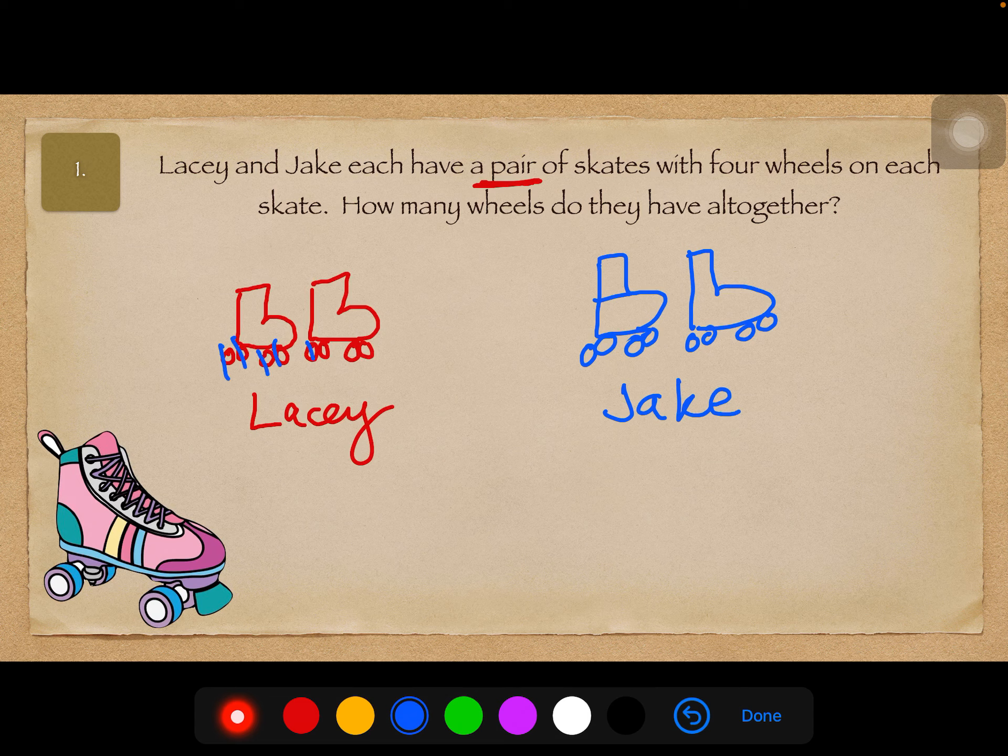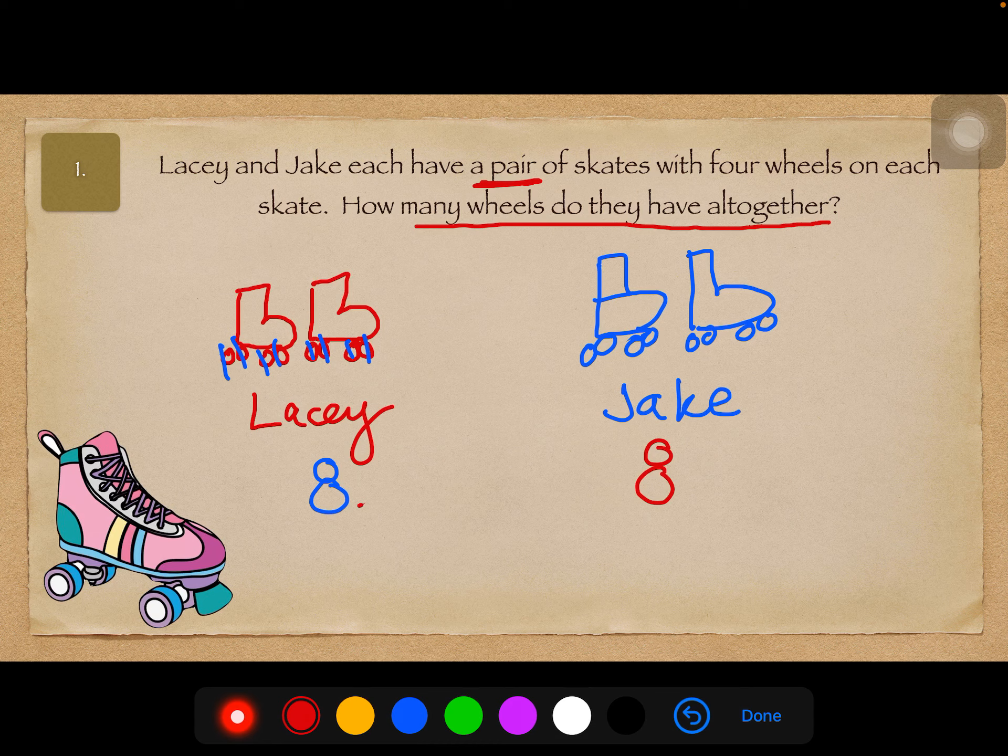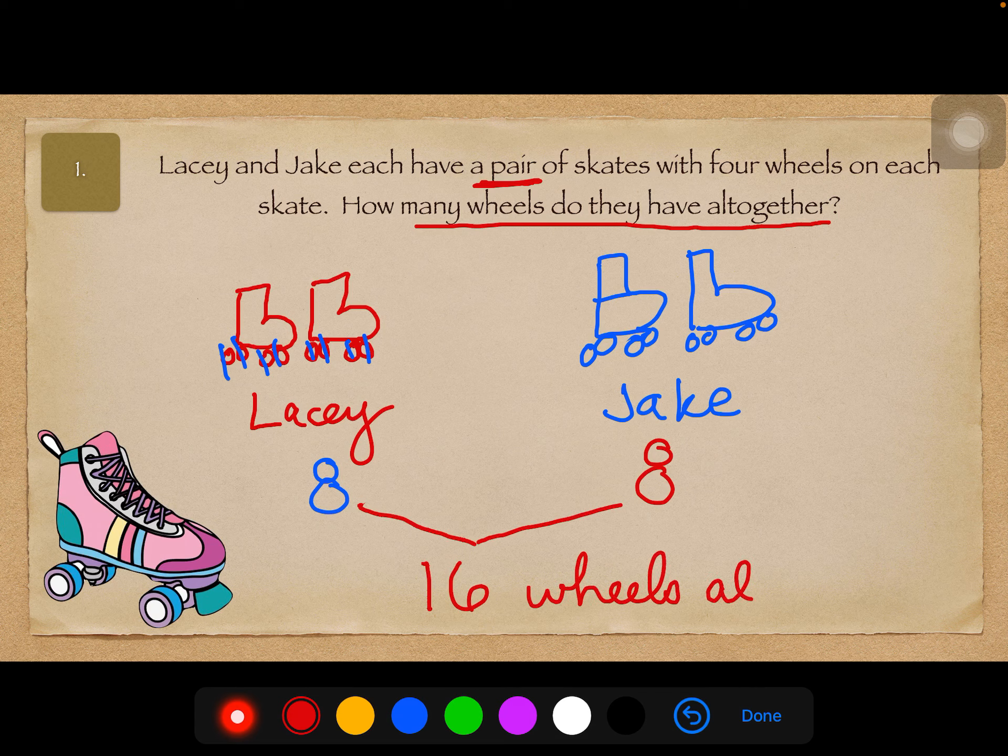So each one has 8 wheels, 1, 2, 3, 4, 5, 6, 7, 8. Lacey has 8, and Jake has 8. The question is how many wheels do they have all together? So 8 plus 8 makes 16. The answer is 16 wheels all together.